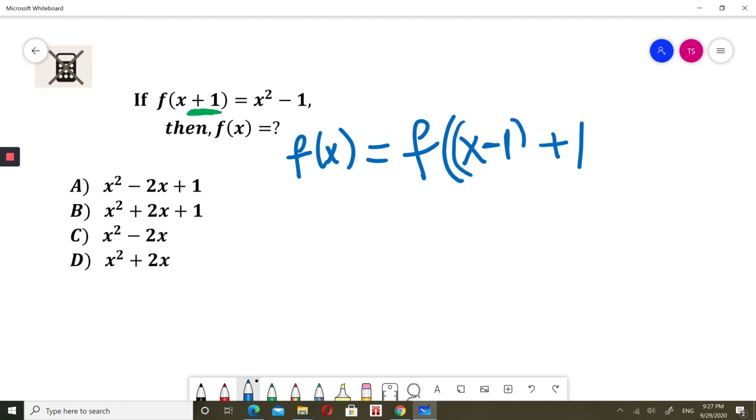And put it in brackets and close it. So now inside the big bracket, f of, I have x minus 1 plus 1, which is just x. So far is correct. Now I'm going to use the given formula: f of x plus 1 equals x squared minus 1.